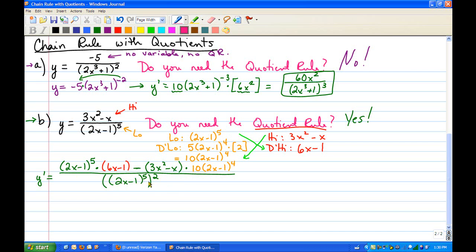Well, that needs to be simplified. So when you have a power raised to another power, remember you multiply the powers. So what we're really going to have is 2x minus 1 to the tenth power. So let's go ahead and put that in. 2x minus 1 to the tenth power. So 5 times 2 is 10.